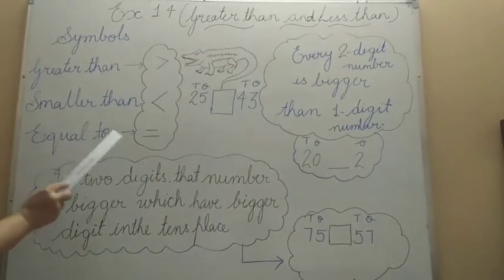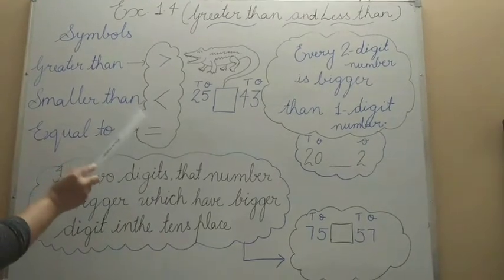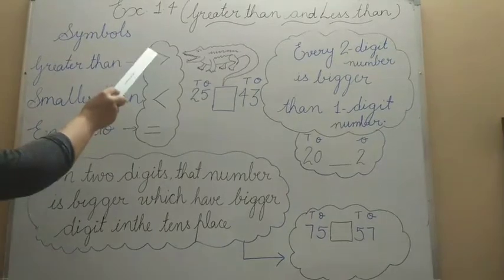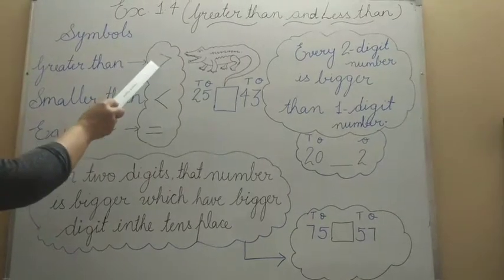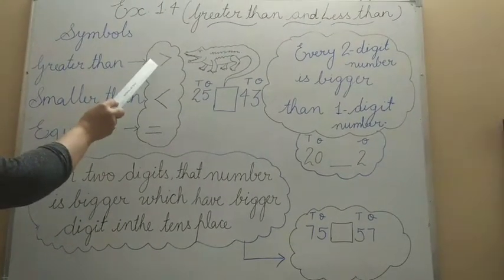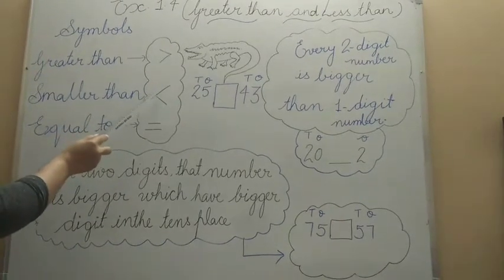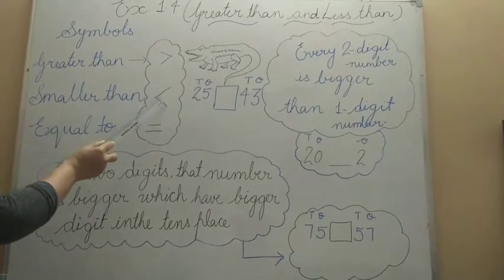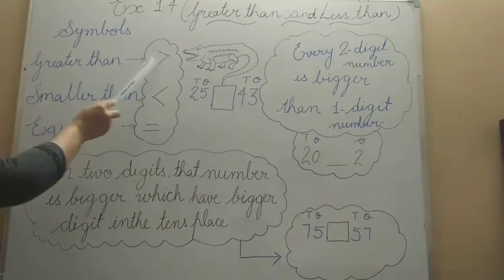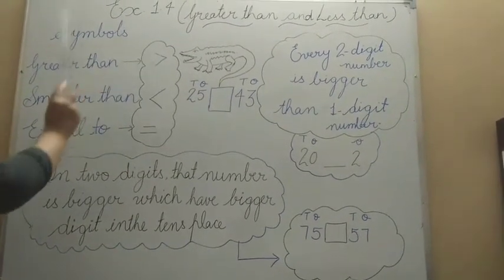Equal to means both side numbers are equal. Now, how to keep in mind which symbol is used for the greater number and which symbol is used to show the smaller number?